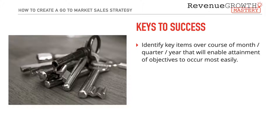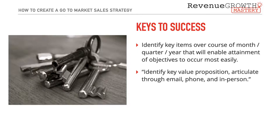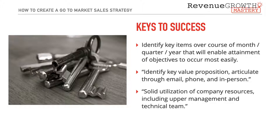The next section is Keys to Success. Identify key items over the next month, quarter, or year that will enable the attainment of those objectives most easily. We're moving from 30,000 feet with the executive summary down to ground level, with each section becoming more granular. Examples include identifying your key value proposition and articulating it through email, phone, and in person — and making sure you leverage every possible resource, including upper management and technical teams, so you never lose a deal alone.